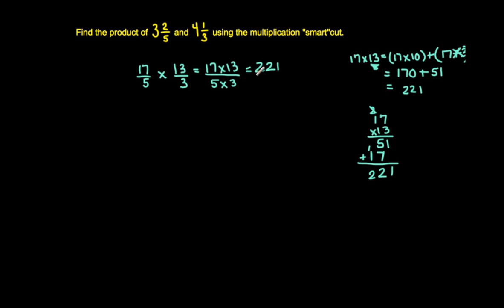So now I'm going to multiply 5 times 3. Very simple, 15. When I do this, now I have to divide 221 by 15.